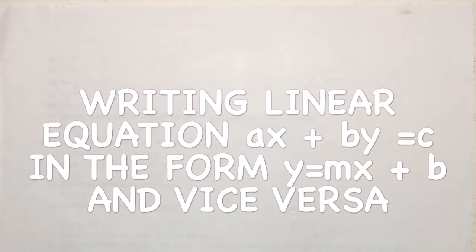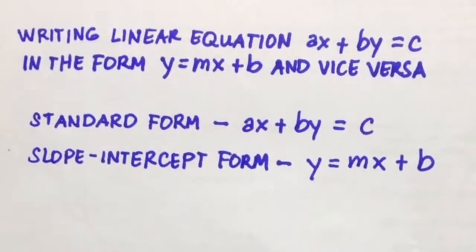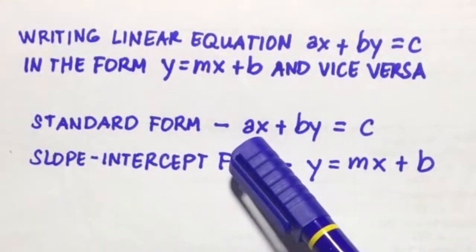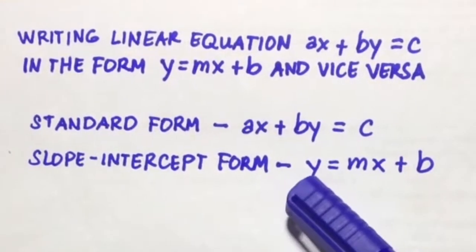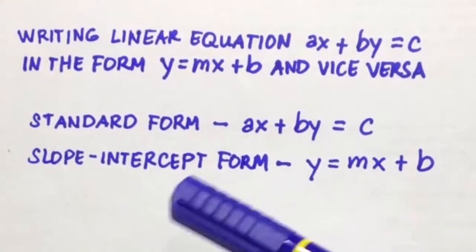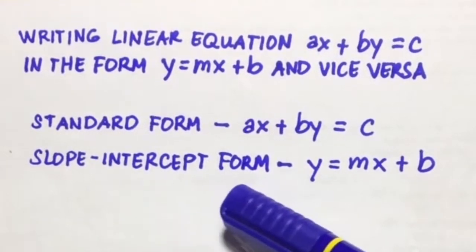Hi guys! In this video, I'm going to discuss writing a linear equation AX plus BY equals C in the form Y equals MX plus B, and vice versa. The standard form of a linear equation is given by AX plus BY equals C, and Y equals MX plus B is the slope-intercept form.